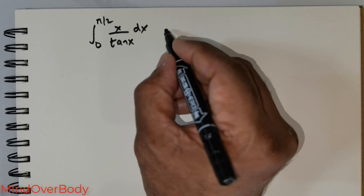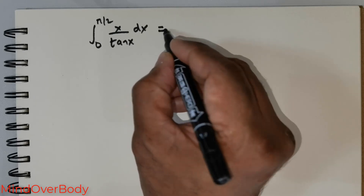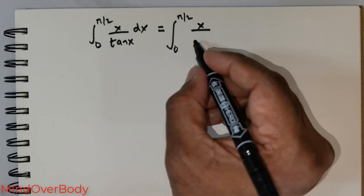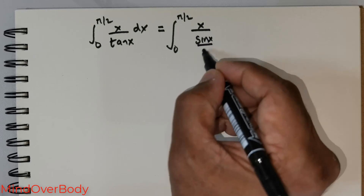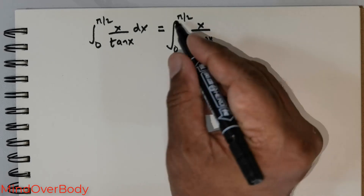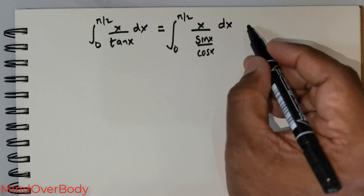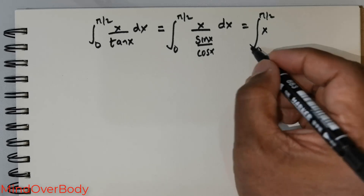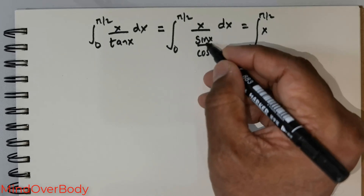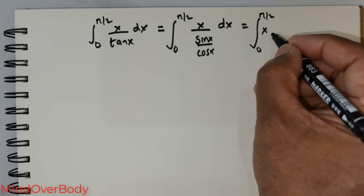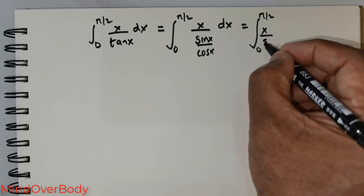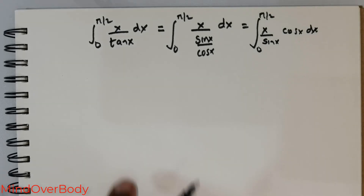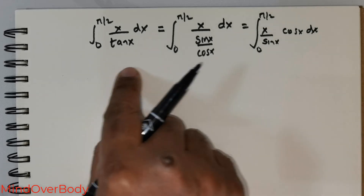What I wish to do is rewrite this as the integral from 0 to π/2 of x over tan(x), where x/tan(x) can be written as x divided by sin(x)/cos(x). Flipping this, we can rewrite it as x times cos(x) over sin(x) dx.